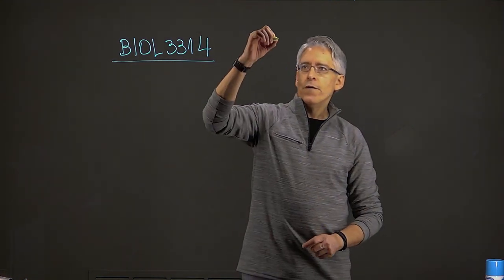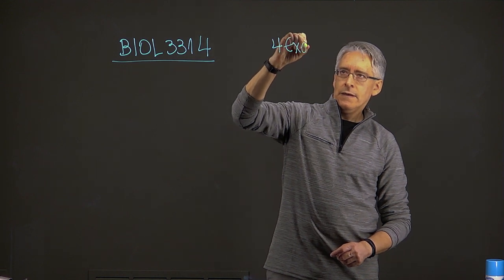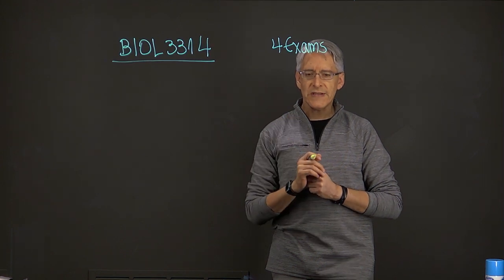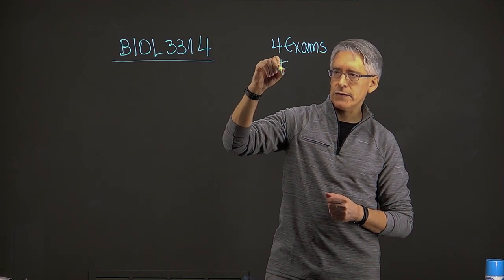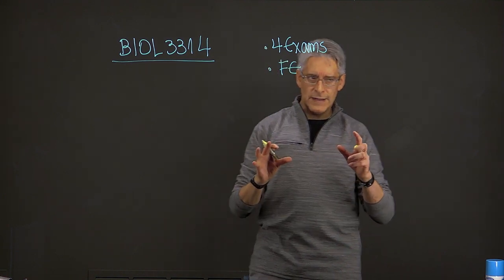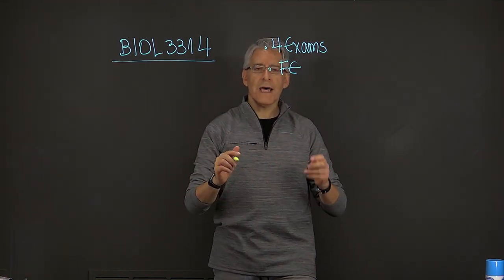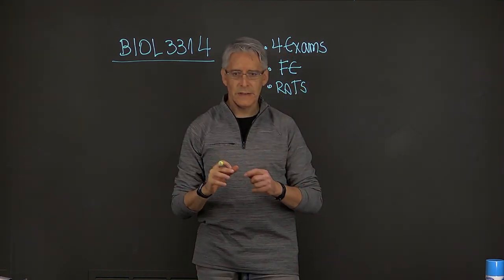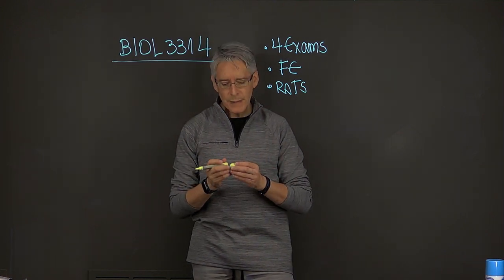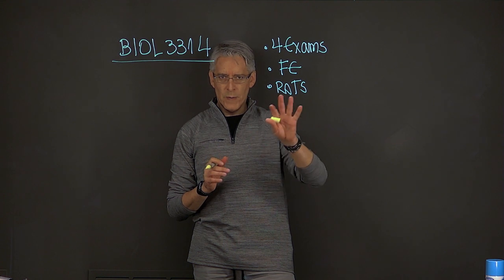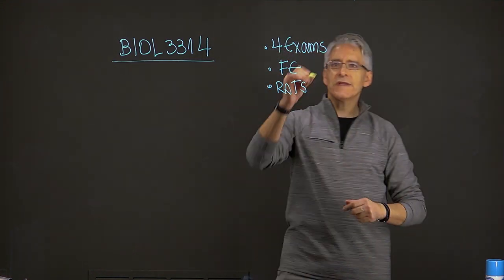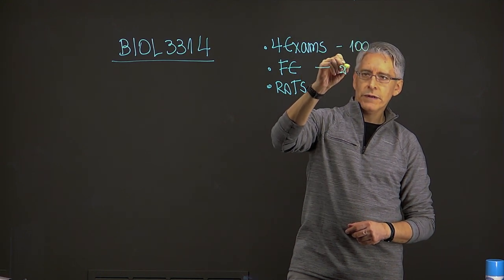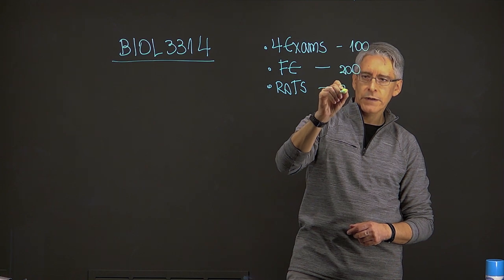We have four exams that are given throughout the semester and we already have two exams at this point. Besides the four exams there is a final exam, FE, so final exam and then on top of that we have the rats, rats that are given throughout the semester, the quizzes that you have to take before coming to class. And now let's associate numbers, values to those exams. Each one of these exams is worth 100 points, the final exam is worth 200 points, and then the rats are also worth 200 points.